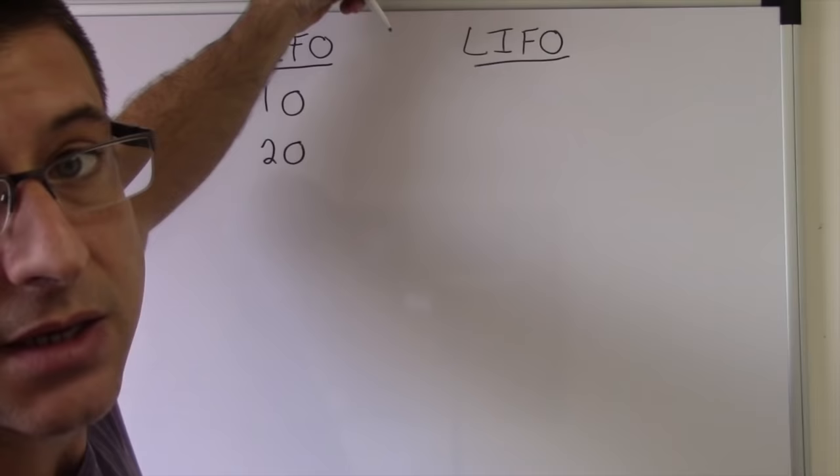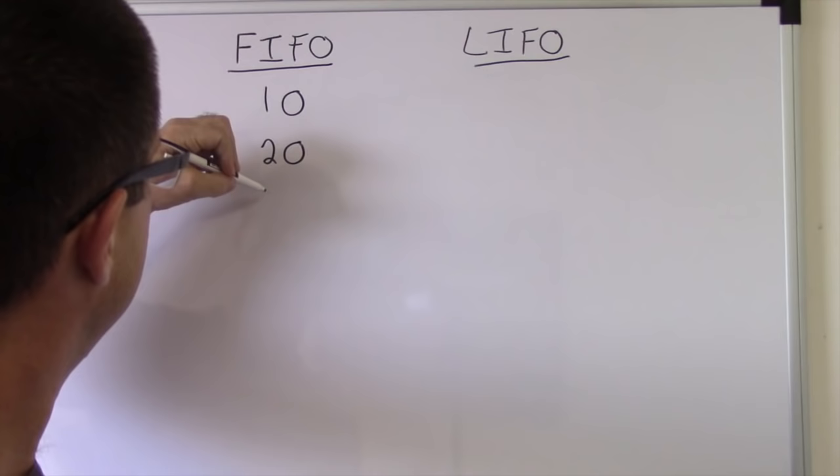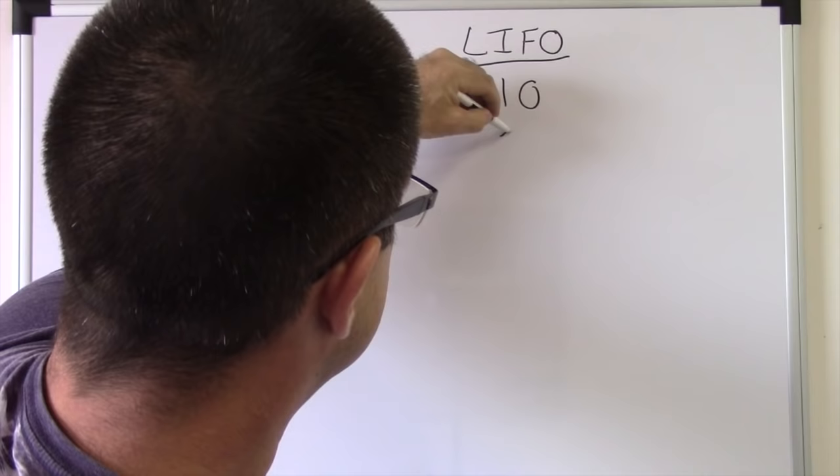This is kind of like how it comes in. This is for rising prices too. Everything you're going to see is going to say rising prices and inflation. Very rarely would the prices go down. But anyway, so $10, $20, $30. This is how you get the inventory, how you get your product.